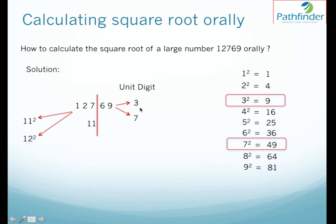To find the second part of the square root, I will need to multiply this 11 by the next number that is 12. So 11 multiplied by 12 is 132. Now we see that our number 127 is less than 132. So 127 is less than 132 and therefore from these two unit digits we will choose the smaller of the two unit digits that is 3.